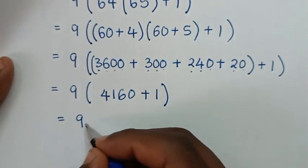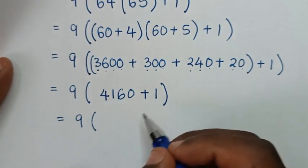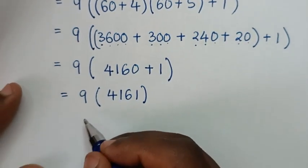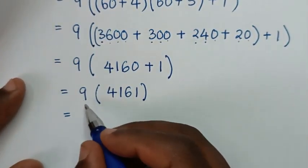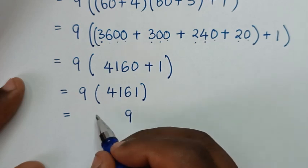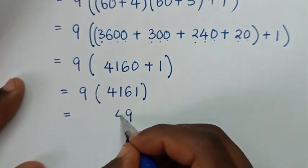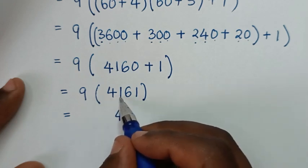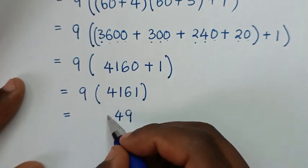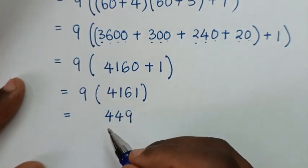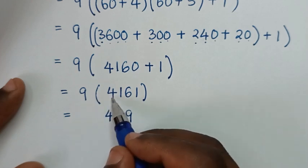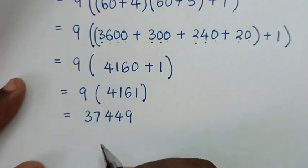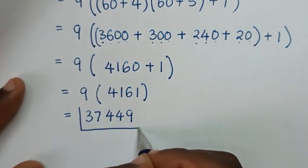So it will be equal to 9 bracket: this plus this is 4161, bracket. Then it will be equal to 9 times 4161: 9 times 1 is 9; 9 times 6 is 54, carry 5; 9 times 1 is 9 plus 5 is 14, carry 1; 9 times 4 is 36 plus 1 is 37. So this is our final answer: 37449.